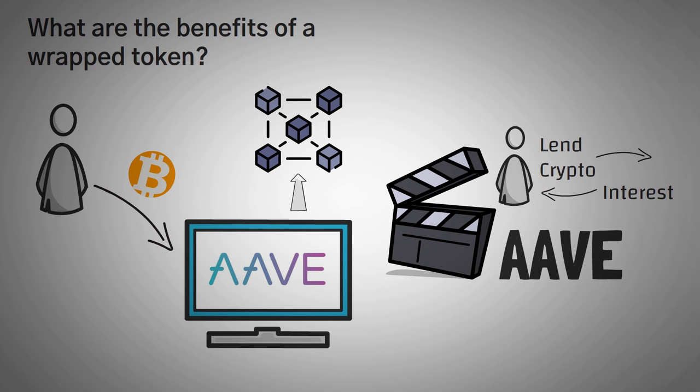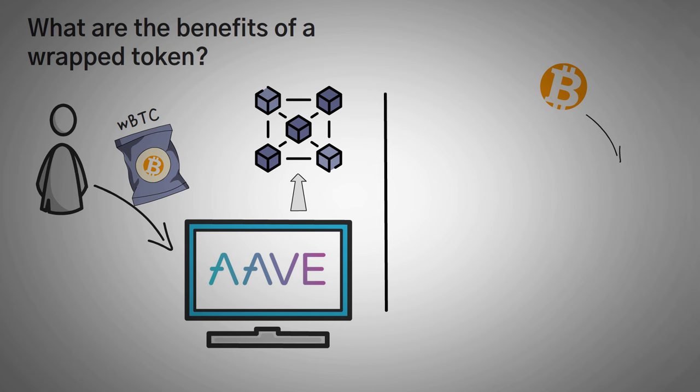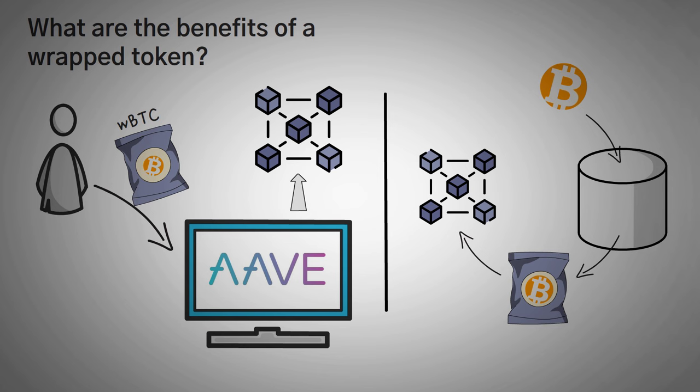So what do you do? You can wrap up your bitcoin and make it a token on the Ethereum network called Wrapped Bitcoin. What you're really doing is locking up your true bitcoin, and then you simply get a wrapped bitcoin as a token on Ethereum to use. Then you have that token you can use on the Ethereum network, but it is a representation of your original bitcoin.